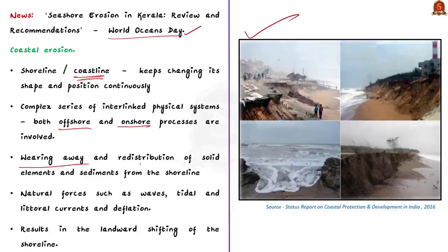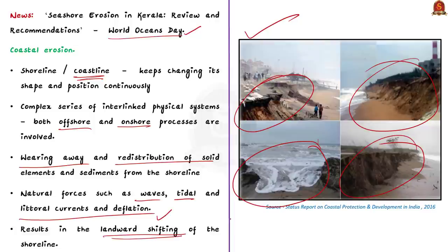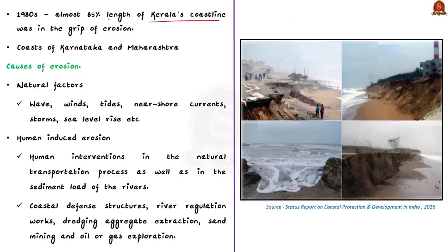Coastal erosion refers to the wearing away and redistribution of solid elements and sediments from the shoreline by natural forces such as waves, tidal and littoral currents and deflation. This erosion or removal of material from one place and its deposition into the other results in landward shifting of the shoreline. When it comes to India, Kerala is the state which is worst affected by the coastal erosion. As per an assessment made in late 1980s, almost 85% length of Kerala's coastline was in grip of erosion. Later, it was found that even the coasts of Karnataka and Maharashtra were also affected badly by sea erosion. The causes of erosion are either natural or manmade. Sometimes, it is a combination of both natural and manmade factors. Natural factors influencing coastal erosion are waves, winds, tides, nearshore currents, storms and sea level.